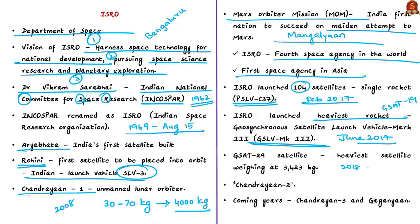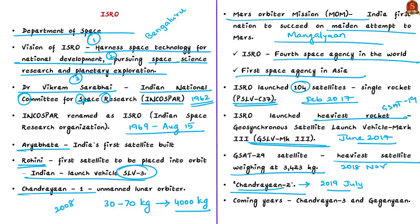ISRO launched its heaviest rocket, GSLV Mark 3, in June 2017, placing communication satellite GSAT-19 into orbit. In November 2018, ISRO successfully launched GSAT-29, its heaviest satellite at 3,423 kilograms, aimed at providing better communication for remote areas. In July 2019, ISRO launched Chandrayaan-2, India's second moon mission, aiming for a soft landing on the moon's south polar region. Though the lander crash-landed, the mission achieved partial success by placing an orbiter around the moon. ISRO is planning Chandrayaan-3 and its first human spaceflight mission, Gaganyaan.